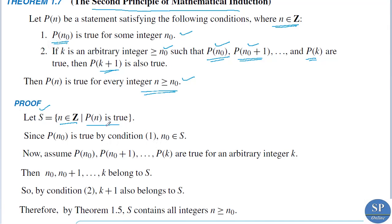Since P(n₀) is true, n₀ belongs to S, because S is the collection of n such that P(n) is true. Now assume that P(n₀), P(n₀+1), etc., P(k) are all true for an arbitrary integer k. Then n₀, n₀+1, ..., k all belong to S by the definition of S.